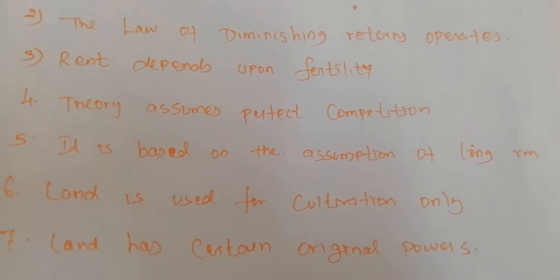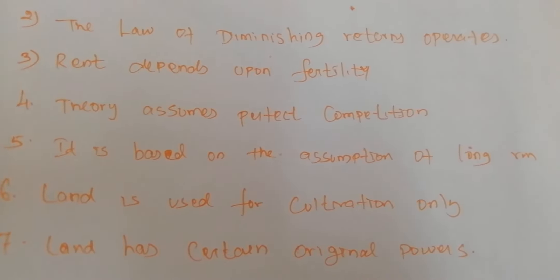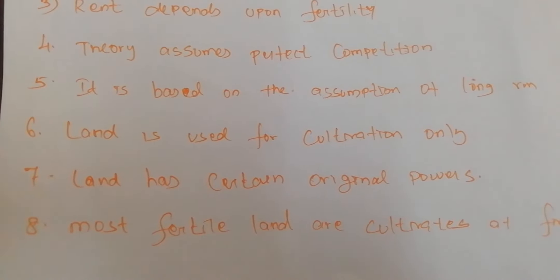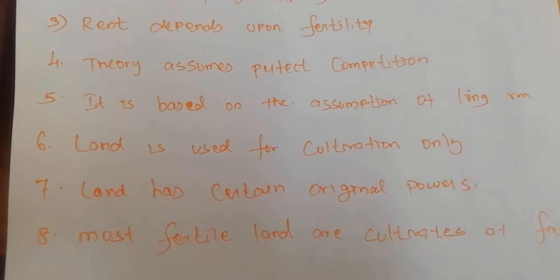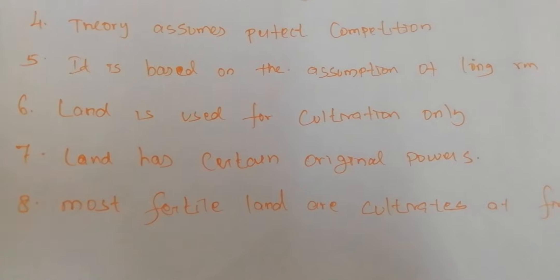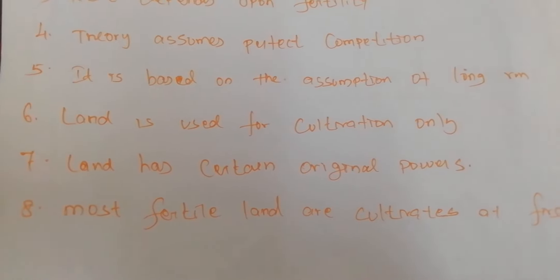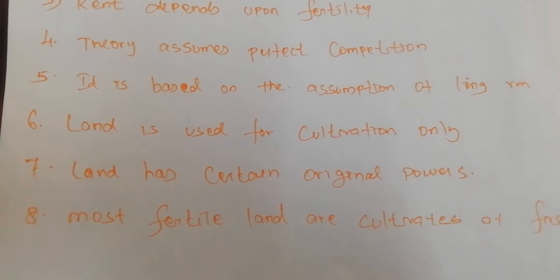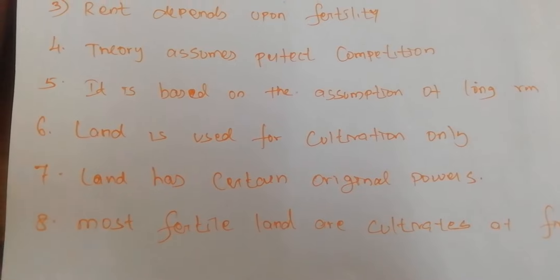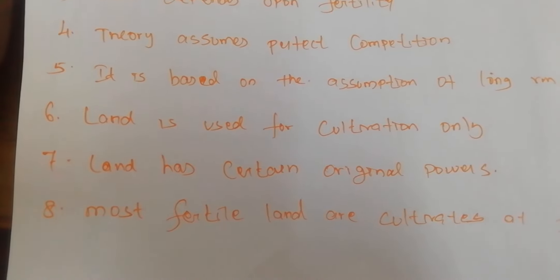This theory assumes perfect competition, meaning everybody can easily enter into the market. Next, it is based on the assumption of the long run, because we do not get yield from cultivated land suddenly — we must consider the long-term phenomenon. Next, land is used for cultivation only; nowadays we use land for many purposes, but Ricardo told us to consider land as used for cultivation only.